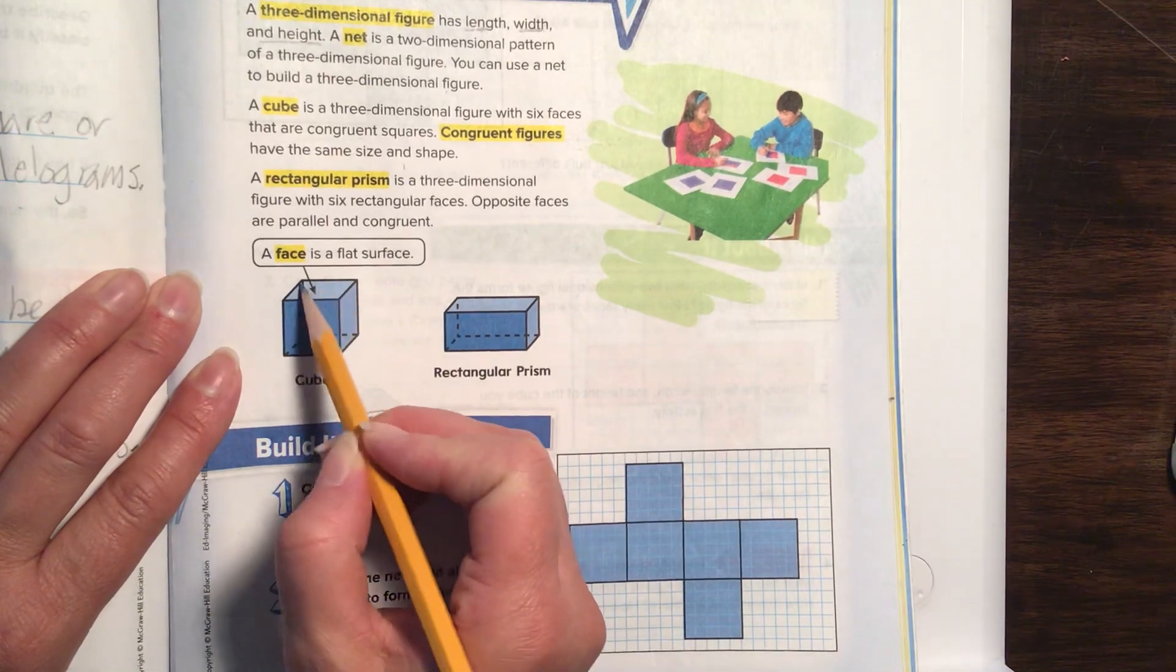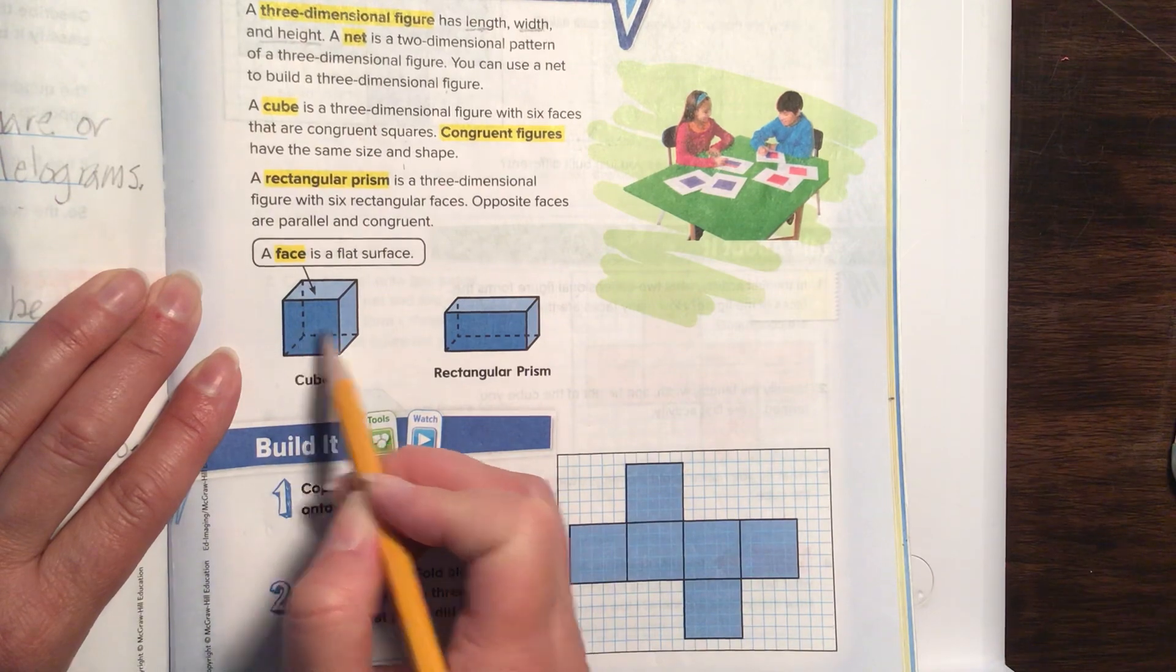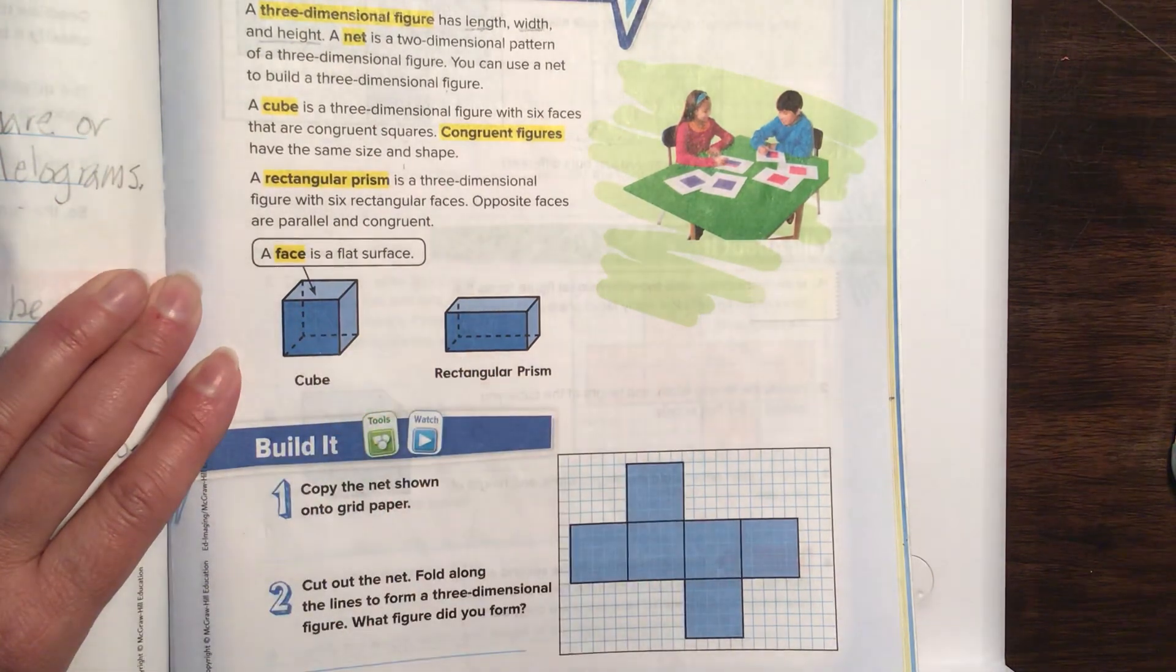If we counted this top part as a face and the bottom part as a face, that's one, two. Then, we have three, four, five, six that go around the cube.